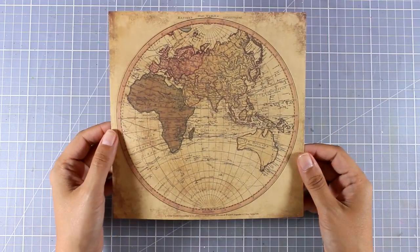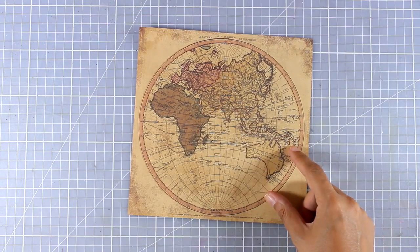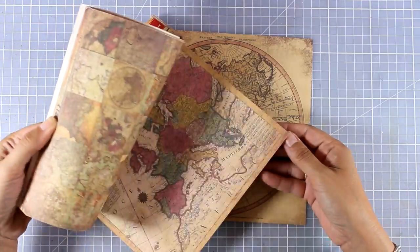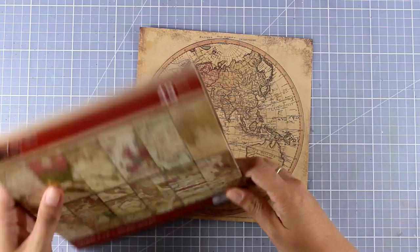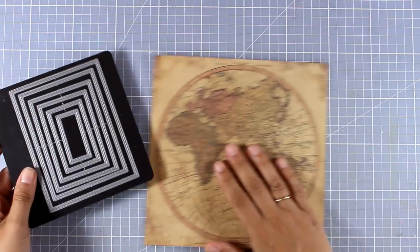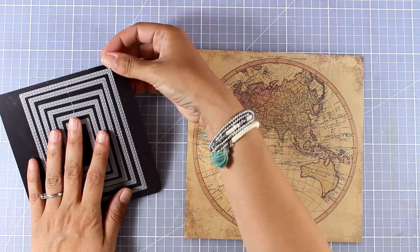For my background I'm going to use this pattern paper with this old map. This comes from this paper pad by Seven Gypsies. It's a very old collection, it is discontinued, but you can use any type of map that you might have at home for your background.